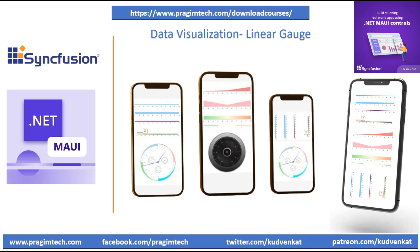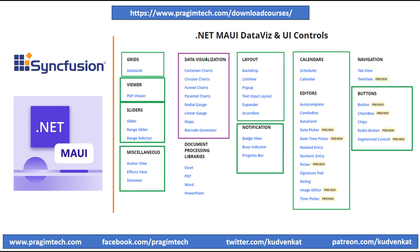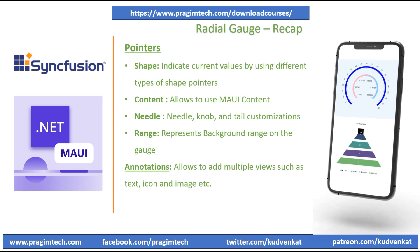Hey guys, I'm Avesh. This is the 30th video of .NET MAUI with Syncfusion Control Series. In the previous session, we discussed about the radial gauges and understood the axis, pointers, range and annotation features of radial gauge control. We have also added interactions to the radial gauge control. Please review the previous session before proceeding.